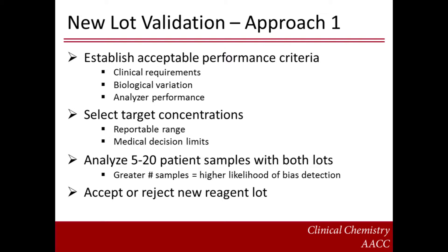Once acceptable performance criteria have been established, the next step is to choose target analyte concentrations. Ideally, the samples should encompass the reportable range of the assay. In practice, however, it may be difficult to obtain patient samples with certain analyte concentrations, and a smaller measuring interval may be taken to represent the consistency of results over the entire reportable range. At a minimum, a laboratory should evaluate samples with concentrations close to the medical decision limits for the test. Once acceptable performance criteria and target analyte concentrations have been chosen, the laboratory can go ahead and test 5 to 20 patient samples with both lots of reagent. The acceptability of the new reagent lot is then decided based on the results of the comparisons. It is important to note that testing a larger number of samples provides a higher likelihood of detecting a problem with the new reagent lot, but test cost and sample availability may sometimes be prohibitive in performing an extensive comparison.